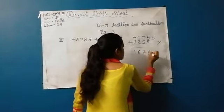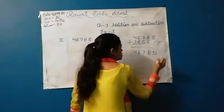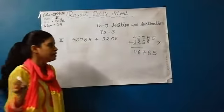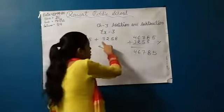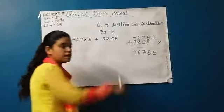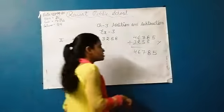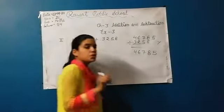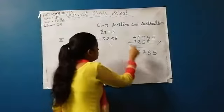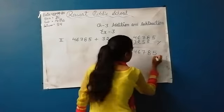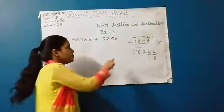Because first of all, you will write the starting digit and then the second digit. How do you write the second digit? You will write starting from the back side. How do you write the second digit? From the back side.